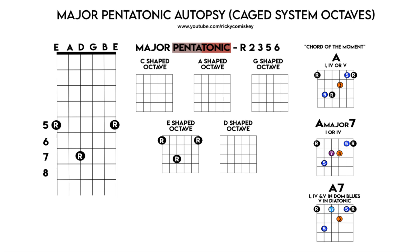The next shape up is the G shaped octave. The E shape and the G shape share the E string, and what you can see on both the thick and the thin E string is that the root and the second - the second note of the scale - have the same distribution, because the thin E string mirrors the thick E string. You can see the G shaped octave pattern there. That second is a really nice colour to add to your chords. If you've seen my compound intervals lesson, you'll know that the second can also be thought of as a ninth.